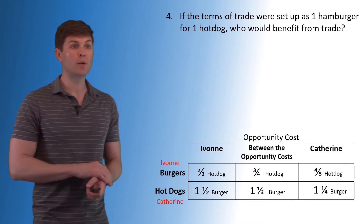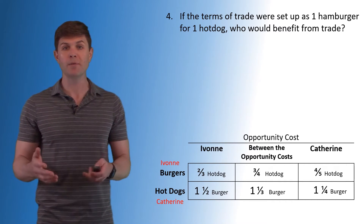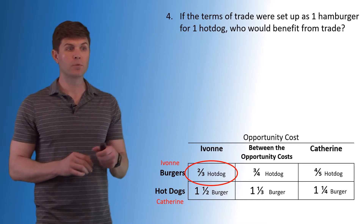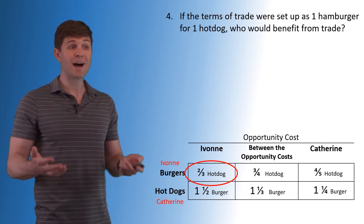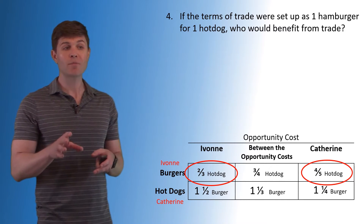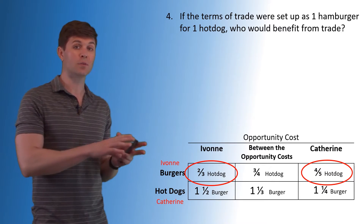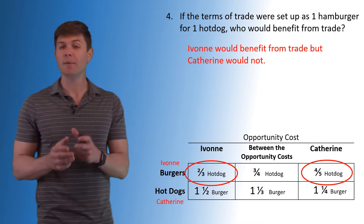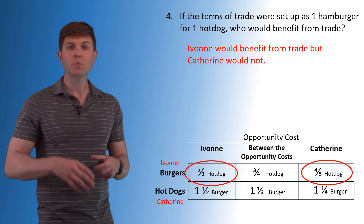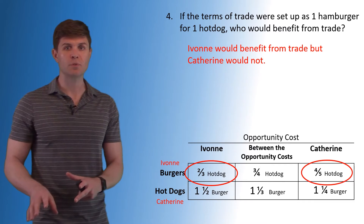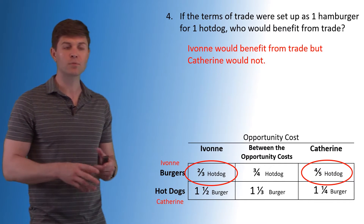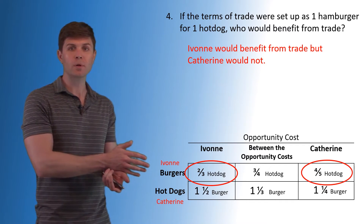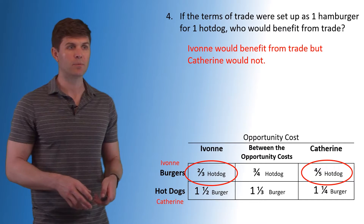Question four: if the terms of trade were set at one hamburger for one hot dog, who would benefit from this trade? Yvonne could trade one burger for anything more than two-thirds of a hot dog, so Yvonne is good in this situation. However, Catherine is not willing to sacrifice any more than four-fifths of a hot dog for a burger because she could do it herself. So Yvonne would benefit, but not Catherine. Catherine would be paying too much when she could just do it domestically. Her domestic price of a burger is four-fifths of a hot dog, so she's not willing to pay a full hot dog for a burger. This trade doesn't work for her — she does not benefit from it.